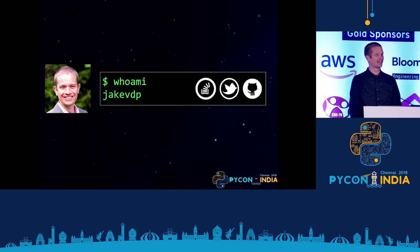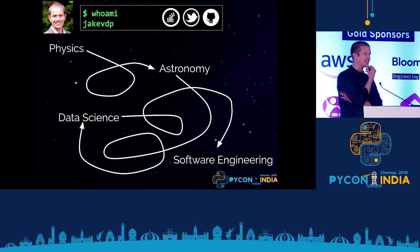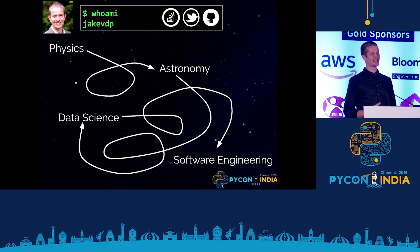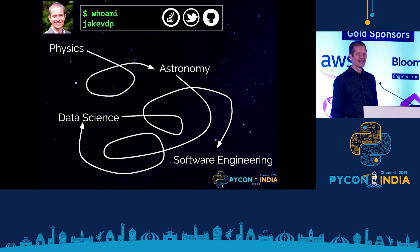First, a little bit about me. My name is Jake VDP. You can find me on GitHub, Twitter, Stack Overflow, or other places like that. My path has been an interesting one. I started studying physics, which led me to studying astronomy, which led me to analyzing large data sets and getting into data science and Python, and eventually that led me into software engineering because I realized the real core of data science is good software engineering. Currently, I'm working as a software engineer at Google.